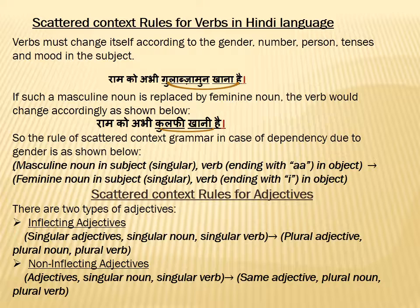Similarly, scattered context rule for verbs. Verb must change according to gender, noun, person, tenses, and mood. We are explaining here with the help of an example of nouns. 'Ram ko abhi gulab jamun khana hai.' Here gulab jamun is a masculine noun.